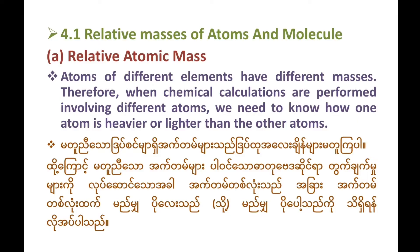4.1: Relative masses of atoms and molecules. Atoms and molecules are very small. Relative atomic mass — atoms of different elements have different masses. Therefore, when chemical calculations are performed involving different atoms, we need to know how one atom is heavier or lighter than the other atoms.